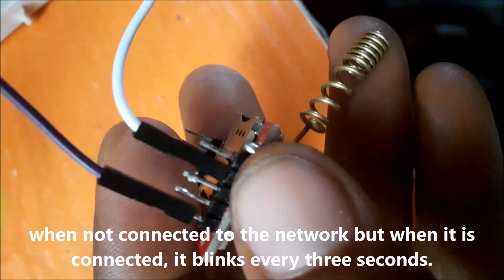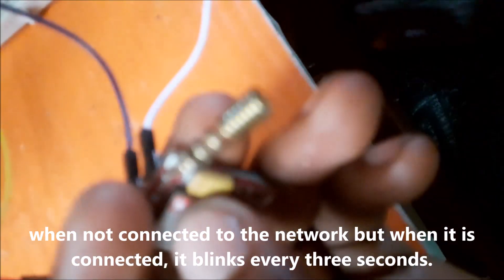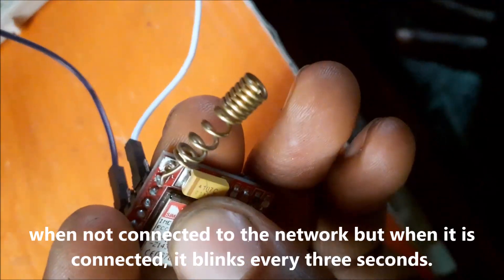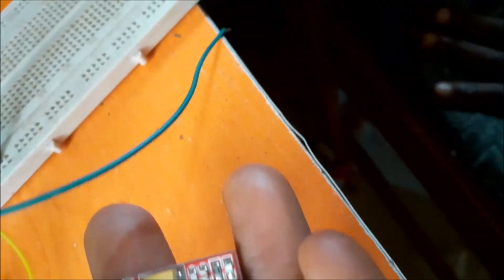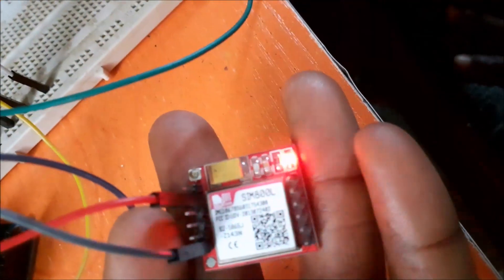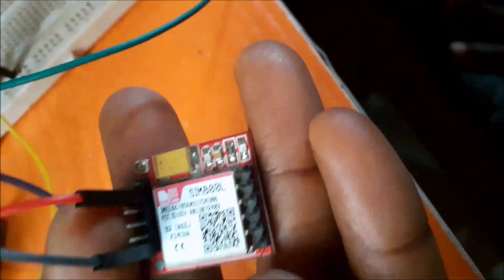The SIM800L GSM module is connected to 3.3 volts power, but in reality, anything around 3.3 volts to 4.2 volts would be ideal. It usually demands an initial burst of current to catch signal reception. Once it moves from blinking every second to every 3 seconds, then you know it has got signal reception of the network of the SIM card inserted in it.